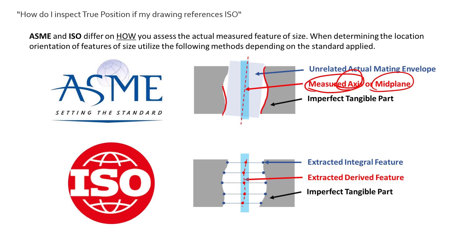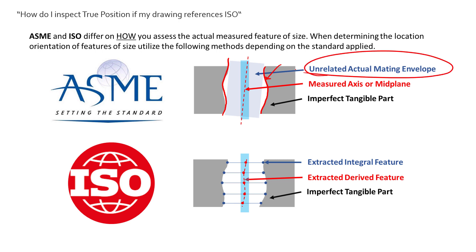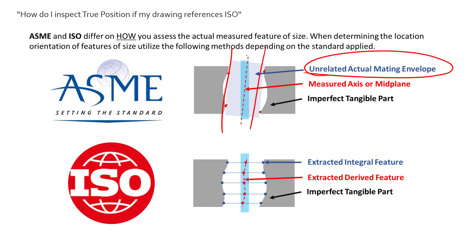So we're controlling the axis of that cylinder. Now how do we get a perfect axis from a cylinder that likely has form and orientation error? That's just how the real world works. How we get a perfect axis to represent that cylinder is what we call the UAME, or the unrelated actual mating envelope. Theoretically, we have this envelope that expands inside an internal feature until it settles on the high points. Now that that envelope is a perfect cylinder, we can get an axis from that perfect envelope, and that axis is the axis that represents the feature we're measuring.